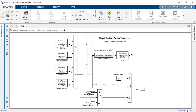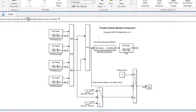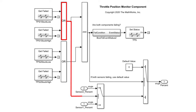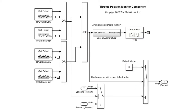This is the Throttle Position Monitor component. It takes input from a primary and secondary sensor. There are four calls into basic software, two for each sensor, to see if each sensor is stuck too high or stuck too low. If the primary sensor is failing, we switch to the secondary sensor. If both sensors are failing, we use another caller to report a more general failure for this component, and the component itself outputs the default value.